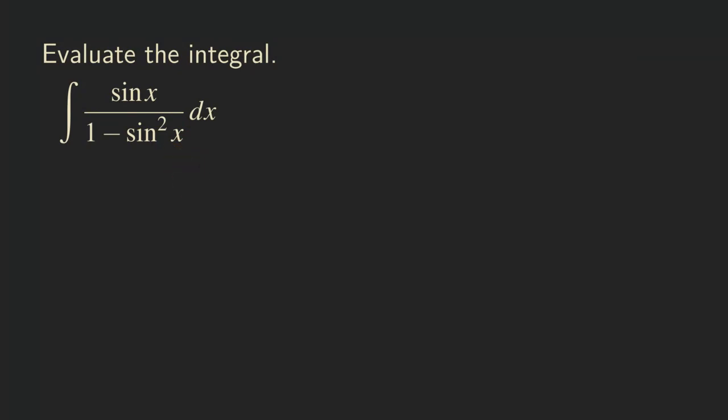So first, we'll just write it as sine x. We do not touch the numerator at this point, and actually there is nothing we can do about it. And then what do we have in the denominator? We have cosine square. So we turn that into cosine square x and then dx.